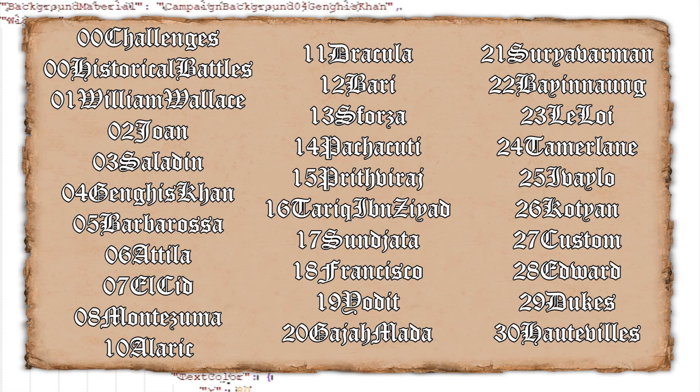Starting with the most basic component: the background material. In this case I used the map of the Genghis Khan campaign by typing in 'Campaign Background 04 Genghis Khan.' You could use the map of any other campaign as well — you just need to know the according number. Please take a look at this list, which goes from the challenge missions over to the Attila campaign to the new ones from Lords of the West. So if you for example want the Bari map as a background, you type in 'Campaign Background 12 Bari.'